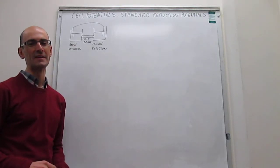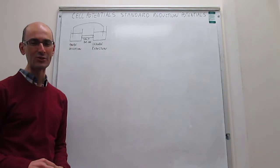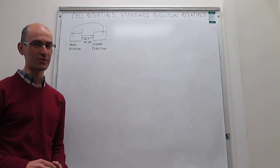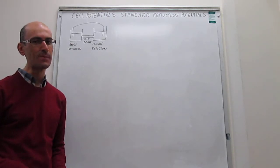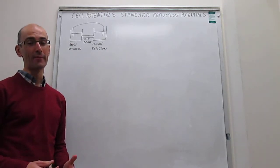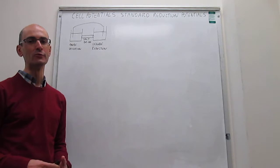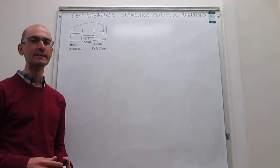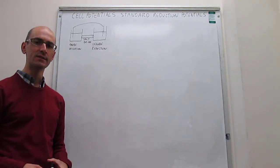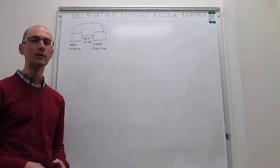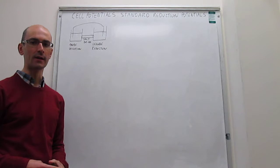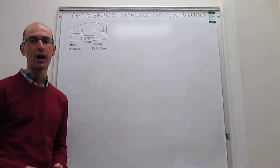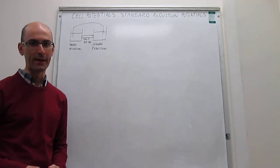In this video we discuss cell potentials and standard reduction potentials. In the prior video we introduced what a galvanic cell is, which is just a way to obtain some electrical work out of a redox pair.